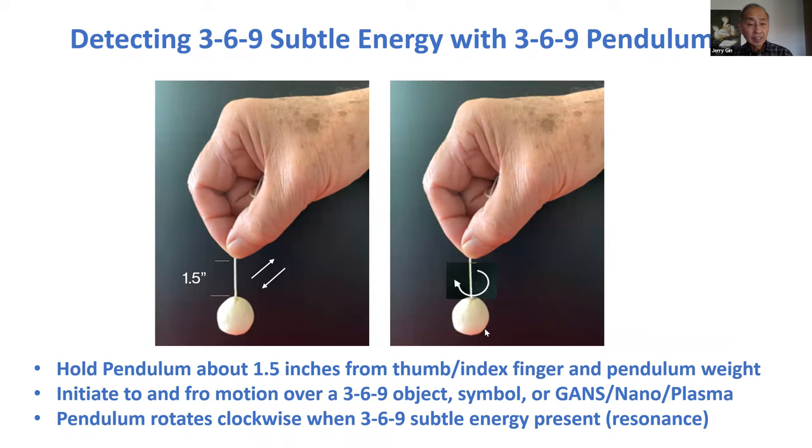Typically, if you hold the pendulum roughly about one and a half inches from the thumb and index finger to the weight and cause a to-and-fro motion to occur, anytime there's 369 energies there, the pendulum will start rotating clockwise. That is how you measure the 369 energies. We'll talk more about that when we discuss GANS, ormus, and plasma structures.